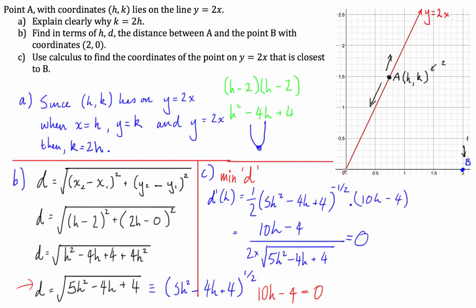So what I'm going to do is I take 4 across the other side and I divide it by 10 and I get h is equal to 4 on 10 which is equal to 0.4. Great. So that's my h value. I can also find my k value because I know that k is equal to 2h. So I can say therefore k is equal to 0.8.